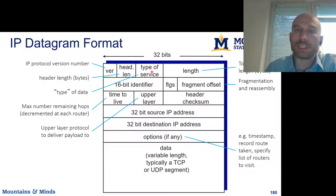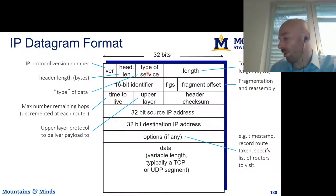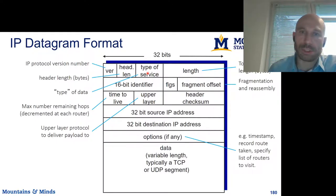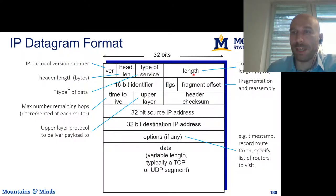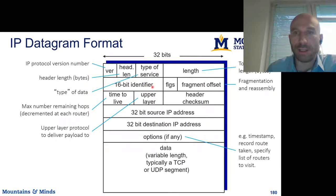The type of service field is not really used in the internet anymore, but it can potentially be used inside data center networks in some cases. Next, we have the length of the packet, which is the total length including the data — we need this to tell how much data there is after the header. We also have the 16-bit identifier, flags, and fragment offset, which are all used for fragmentation and reassembly.